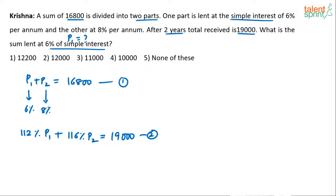So P1 plus P2 equals 16,800 is one equation. 112% of P1 plus 116% of P2 equals 19,000 is the other equation.